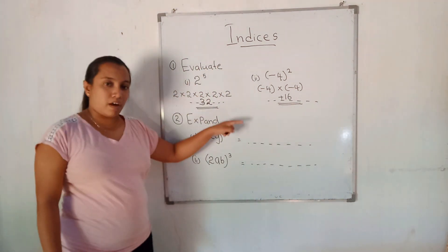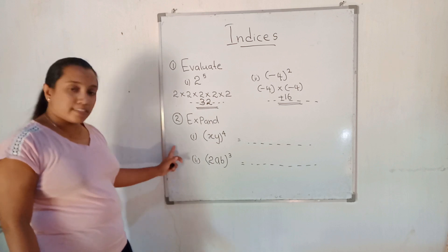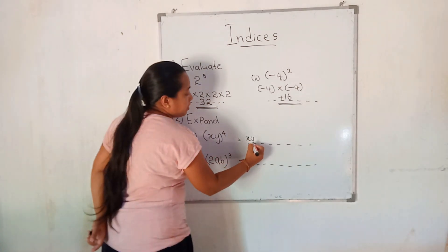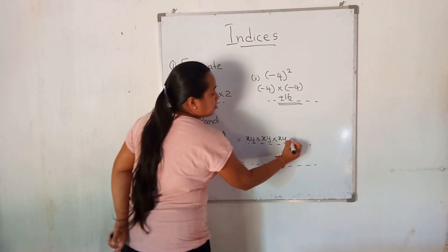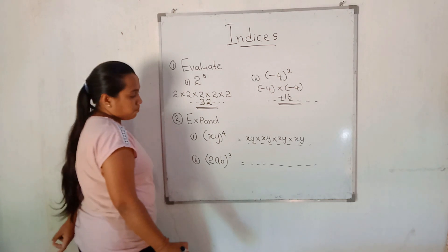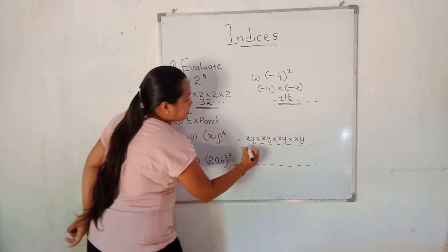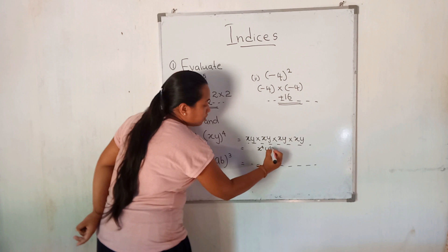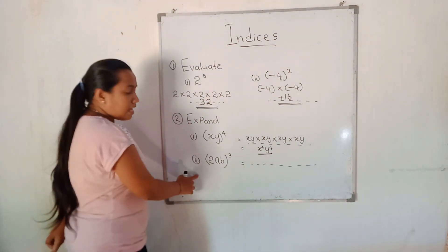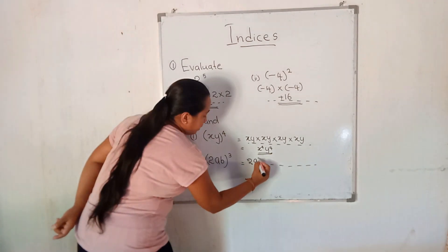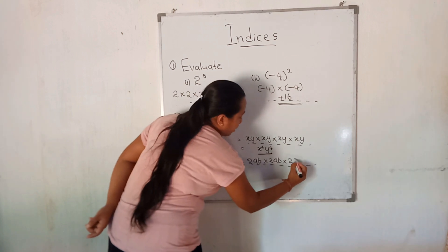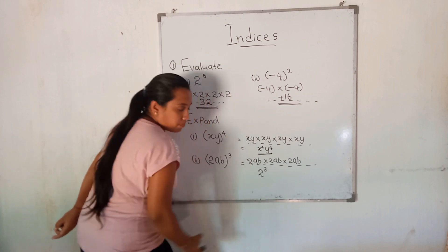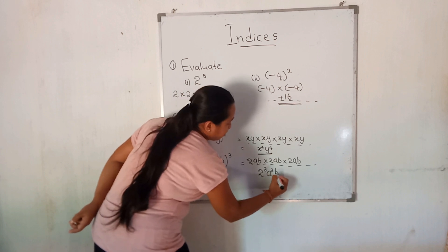Those are the answers for the first part. Now for the second part, expand. To expand (xy) to the power 4: it is xy × xy × xy × xy. This can also be written as x to the power 4 multiplied by y to the power 4. Another example: 2ab × 2ab × 2ab gives 2 to the power 3 — which is 8 — multiplied by a to the power 3 multiplied by b to the power 3.